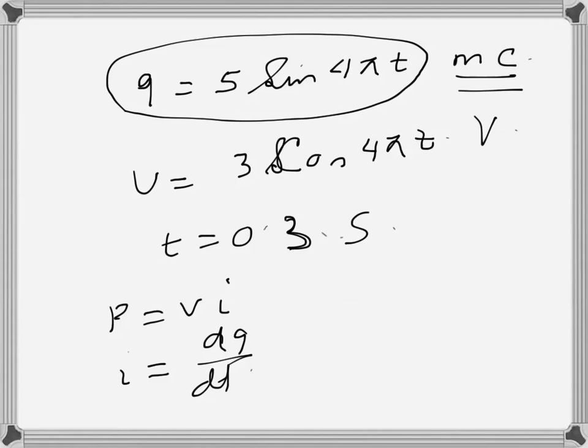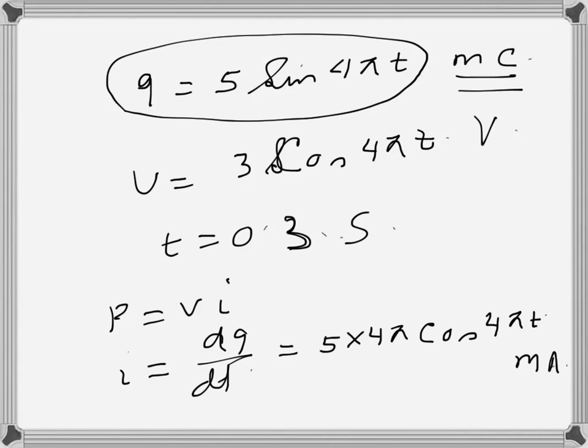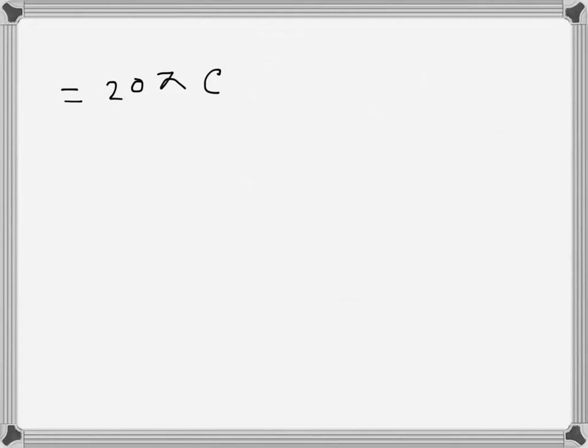Since the charge is in millicolumb, the current will be in milliamps. This will be 5 times 4π cos 4πt milliamps. So we can write 20π cos 4π times 0.3 milliamps.